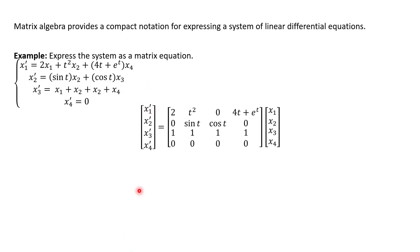In matrix equation form, notice what we have: the derivatives of x1, x2, x3, and x4 equal this coefficient matrix times the vector containing our unknowns. If you do matrix multiplication across each row times this column vector you would get, one at a time, each of the original four equations. For example, the first row gives 2 times x1 plus t-squared times x2 plus 0 times x3 plus (4t + e^t) times x4, which equals x1 prime.